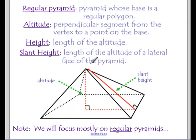A regular pyramid — which is the kind we're going to study in this class — is one where the base is a regular polygon and all those triangles are congruent. So all the symmetry that you think of with a pyramid, you can assume that. The pyramids we're going to look at in this class will all be like that, meaning this vertex is going to be directly above the center of the square on the bottom.